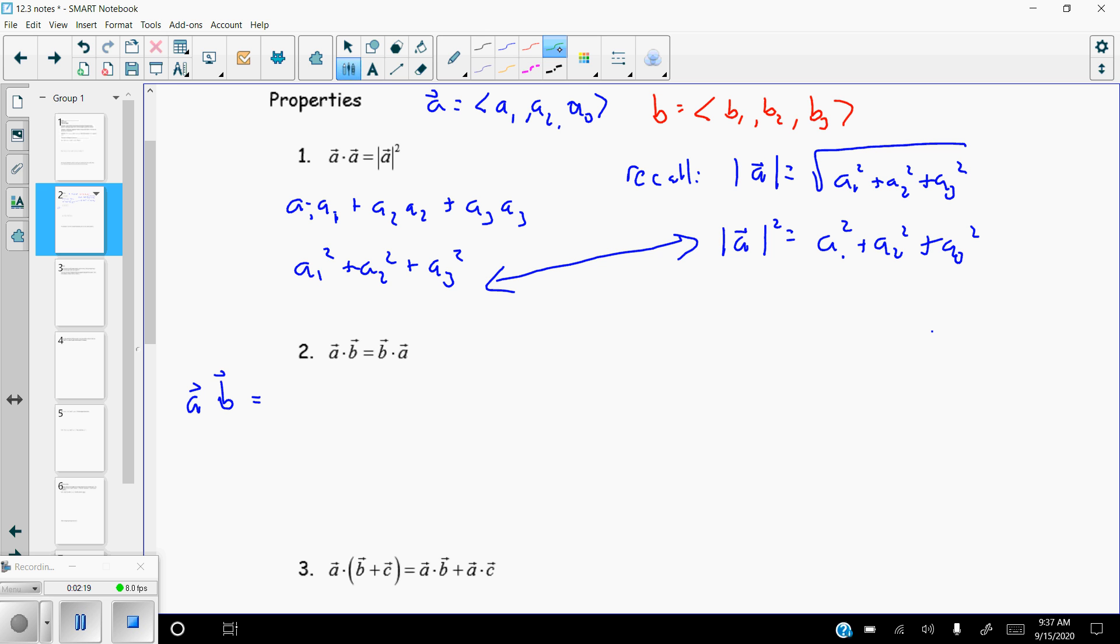So now we've got a·b, so that's going to be a1 b1 plus a2 b2 plus a3 b3. And supposedly that's supposed to equal b·a, well b·a is going to be basically the same idea, except this time it's going to be b1 a1 plus b2 a2 plus b3 a3.